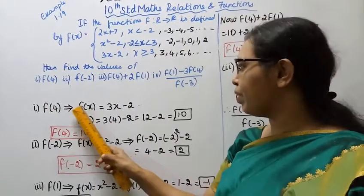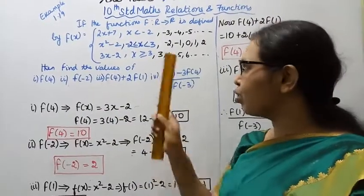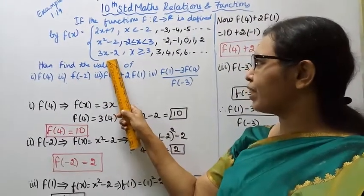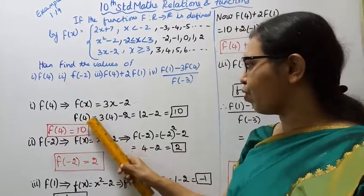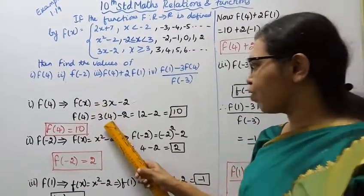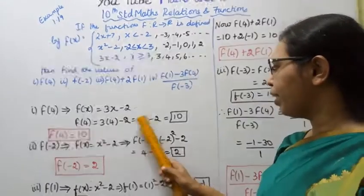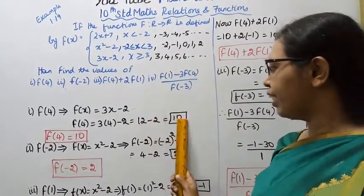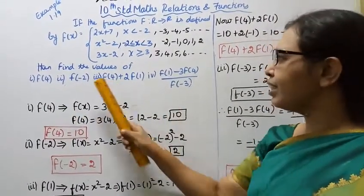What do we do? f(4) equals 3 into 4, that is 12 minus 2, which equals 10. Let me write this: f(4) equals 10. Second question: